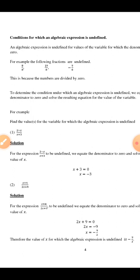Another condition to note: if you have a fraction and you check the denominator — when you equate it to zero and you get a negative number, that means you use that result because the answer must be equal to zero or greater than zero. If you check both answers and don't get that, then you take the numerator, the top part. That is the condition for whether an algebraic expression is undefined. Please rewind and listen again if you missed anything.